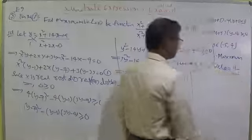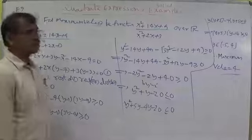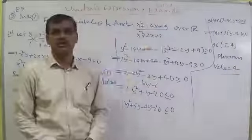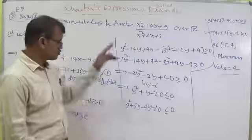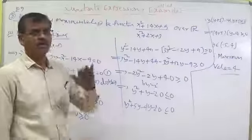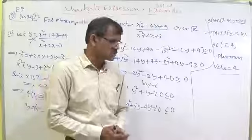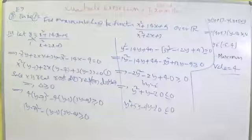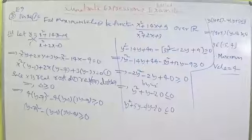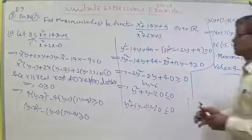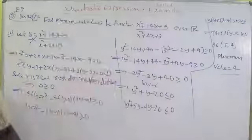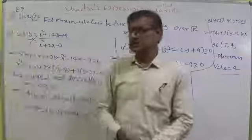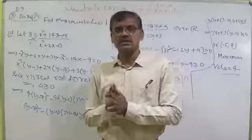The maximum value of the given function is 4. Do not use the formula 4ac minus b² by 4a for this type of problem — that would be a wrong process. We have now completed all the example sums based on the range concept and minimum-maximum concept of quadratic expressions. Let us go and discuss exercise 3B in the next class.